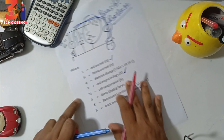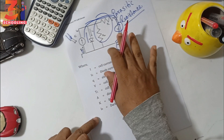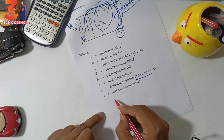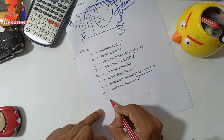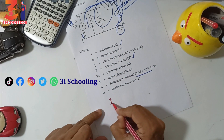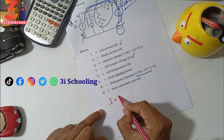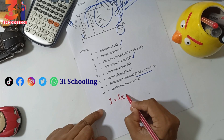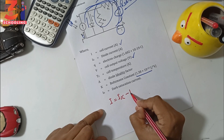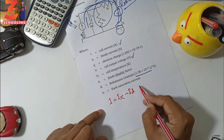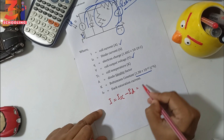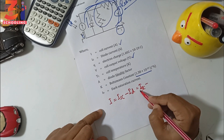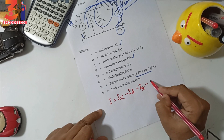In the solar cell equivalent circuit, the total cell current equals the short circuit current minus the diode current: I = Isc - Id.